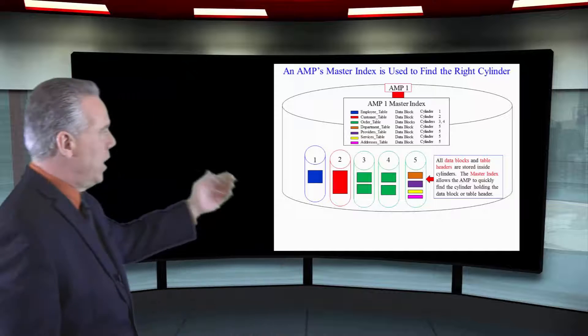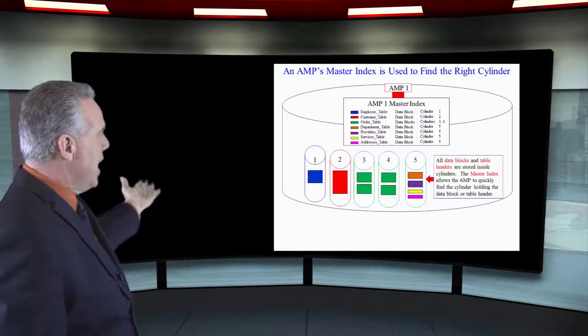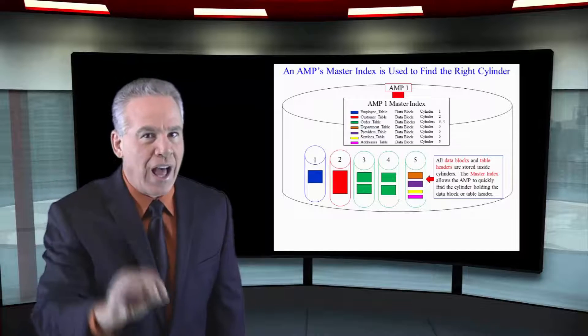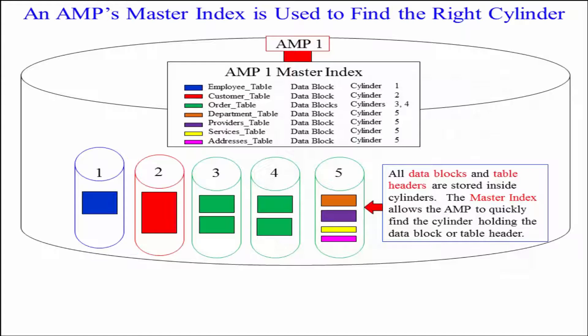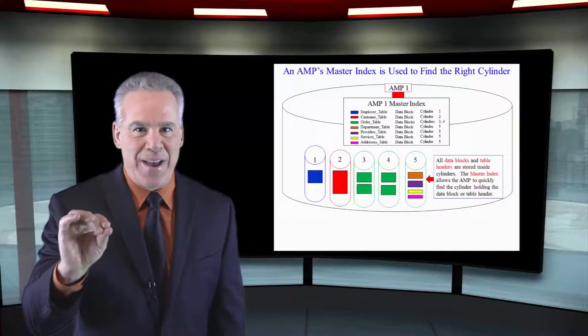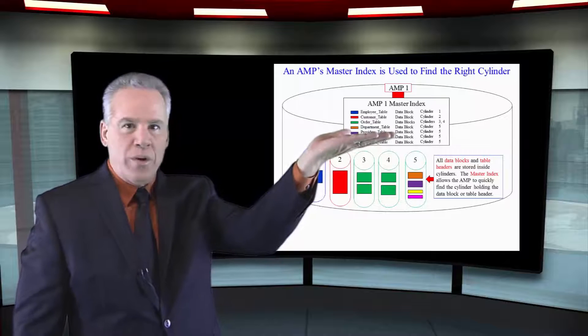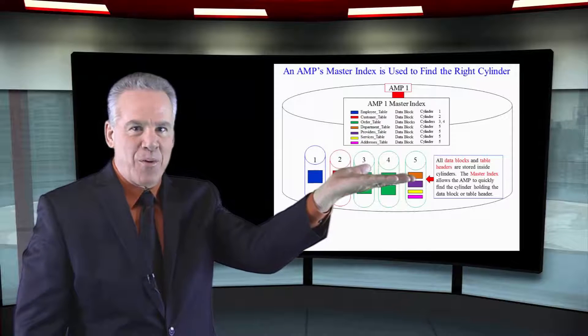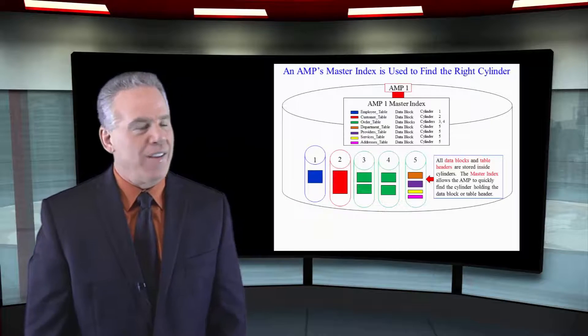Now take a look at this. In our first cylinder, we've got our blue table. In the second cylinder, we've got a bigger red table. Notice cylinder three. We've got two blocks of the order table. And in cylinder four, we've got two more blocks of the order table. That's because it has split many times. So as you can see here, you will have all of these cylinders. The cylinders will contain one or more tables inside of them. But the amp always knows exactly where they're located because it looks at its master index in memory and it can go get the information very quickly.